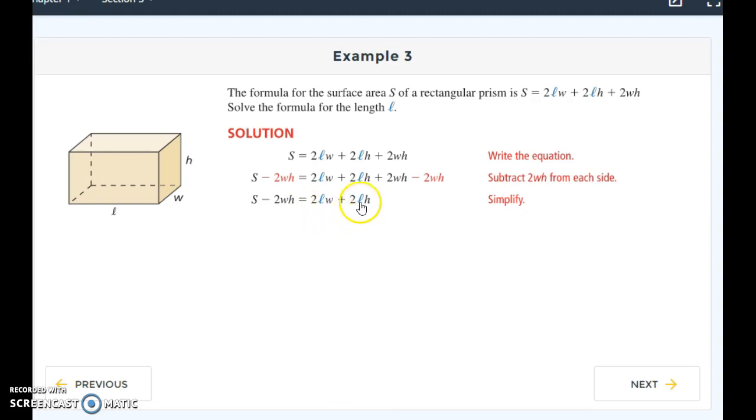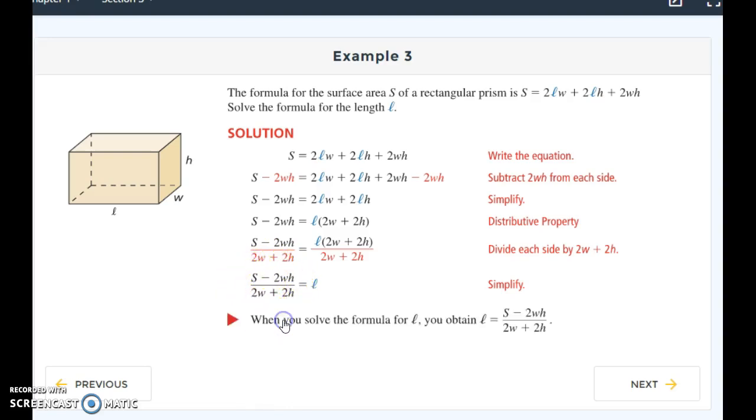So now I have S minus 2WH equals 2LW plus 2LH. Now, just like our last example, I have an L in both of my terms. So I can go ahead and use the distributive property to get that L separated a little bit. And again, I'm multiplying, so I went ahead and undo that. So I divide by 2W plus 2H. And then I can simplify again. And when I'm looking at this left side, I don't see any other simplification that can happen between all of my terms. So I know that that's going to be my final answer, is my L equals S minus 2WH divided by 2W plus 2H.